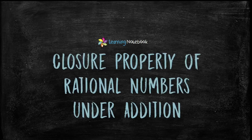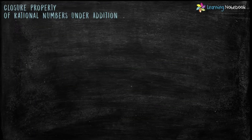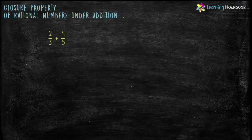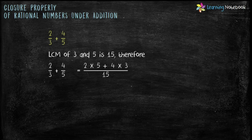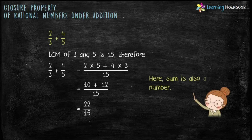Now let's understand closure property of rational numbers under addition. Let's understand this with help of examples. Add two rational numbers 2 by 3 and 4 by 5. LCM of 3 and 5 is 15. Therefore the sum equals 2 into 5 plus 4 into 3 by 15, which is 10 plus 12 by 15. We get the sum as 22 by 15. Notice that the sum of two rational numbers is also a rational number.